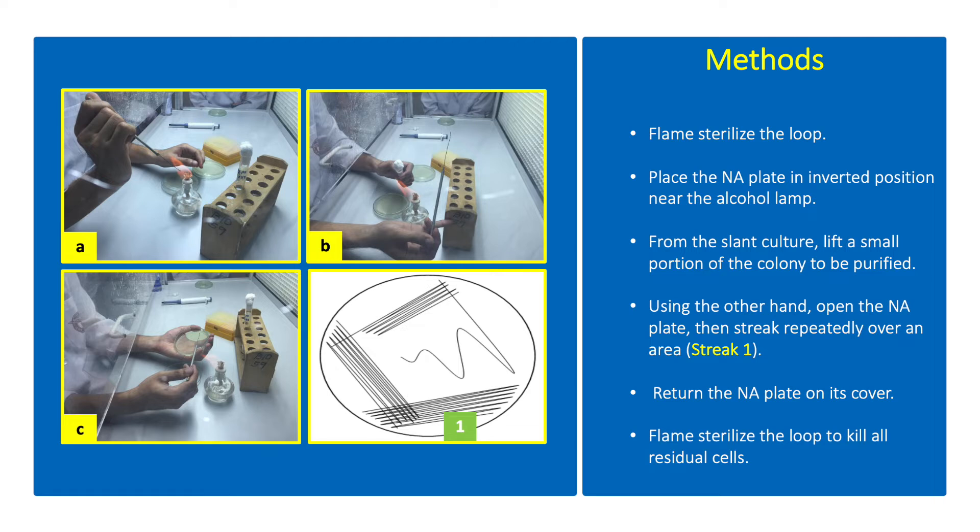Place the NA plate in inverted position near the alcohol lamp. From the slant culture, leave a small portion of the colony to be purified. Using the other hand, open the NA plate, then streak repeatedly over an area. Return the NA plate on its cover, then flame sterilize the loop to kill all residual cells.